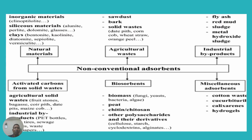Then come non-conventional adsorbents. These can be natural materials and products — for example, inorganic materials and clays — agricultural waste such as sawdust and bark, solid waste, industrial byproducts like fly ash, red mud, and sludge, and also activated carbons from solid waste — for example, agricultural solid waste, fruit stones, and other biomass-derived materials.